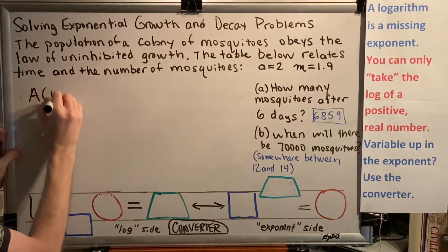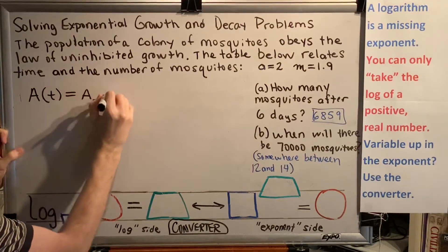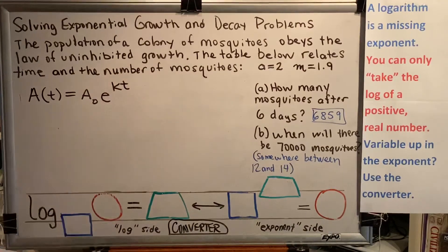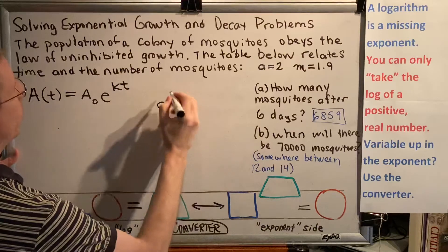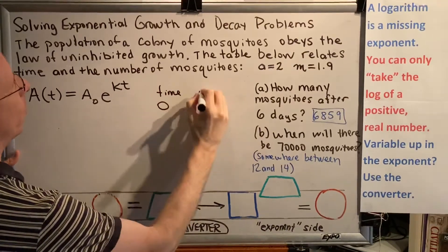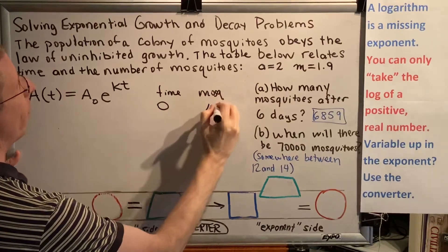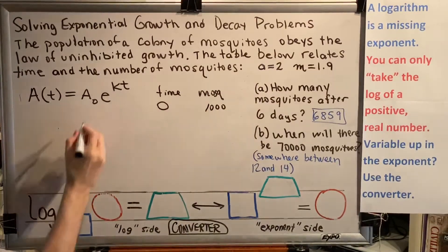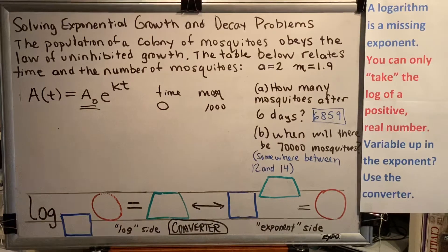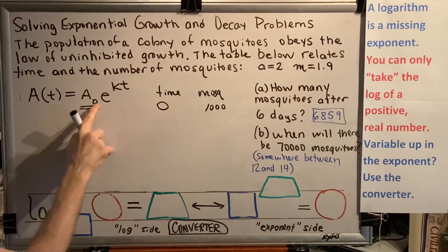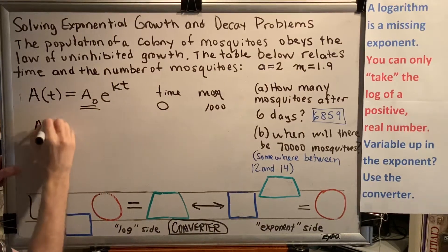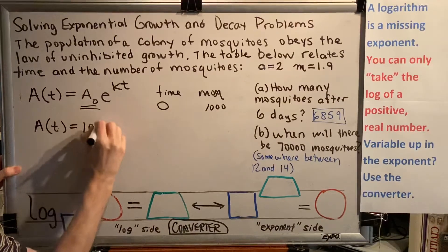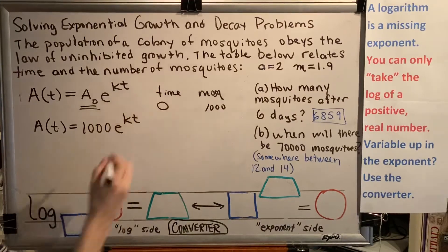The exponential law equation says A of t equals A naught e to the kt power. Let's start filling in what we know. From the previous video, we know that when the time was zero, the number of mosquitoes was 1,000. So that tells us the value of A naught, the starting amount — the amount when time is zero. So now I'm dealing with A of t equals 1,000 e to the kt power.